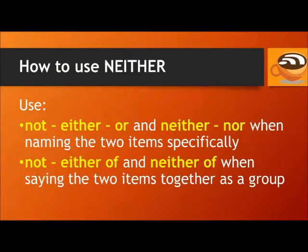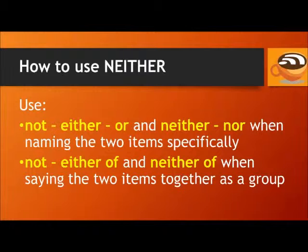As you can see in the example sentences, we use 'not...either...or' and 'neither...nor' when naming the two items specifically — for example, 'I speak neither French nor Spanish.' And we use 'not either of' and 'neither of' when saying the two items together as a group — for example, 'I speak neither of those languages.'